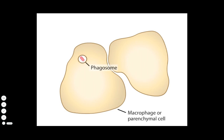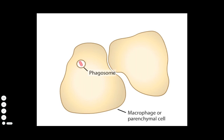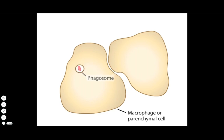Normally, a phagocytosed bacterium would be digested by the macrophage, but Listeria releases a toxin that lyses the phagosomal membrane, allowing the bacterium to move freely throughout the cytoplasm.